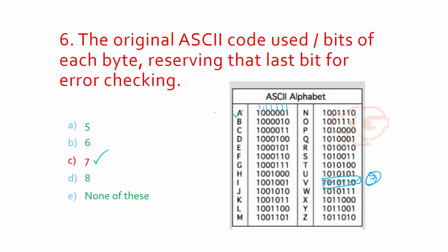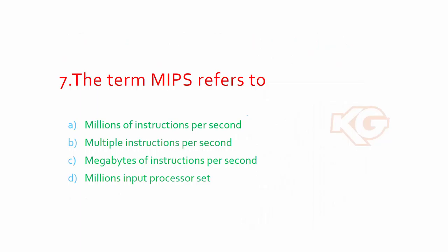The term MIPS refers to? I hope you got the answer. The correct answer is option A: millions of instructions per second. You might be slightly confused with multiple instructions or megabytes, but this is the correct answer.